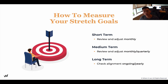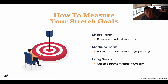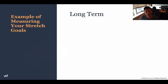Short term, we're going to review and adjust on a monthly basis. Medium term, we review and adjust monthly and quarterly. Long term, we check the alignment ongoing and yearly. It is important to set goals but also to always go back and visit them to see if we're any closer or if the strategy needs to change. All these things we're setting out are assumptions — we need to go back into the marketplace to validate whether these strategies work. And if they don't, we need to pivot. That's why we need to revisit our stretch goals on a yearly, quarterly, and monthly basis.